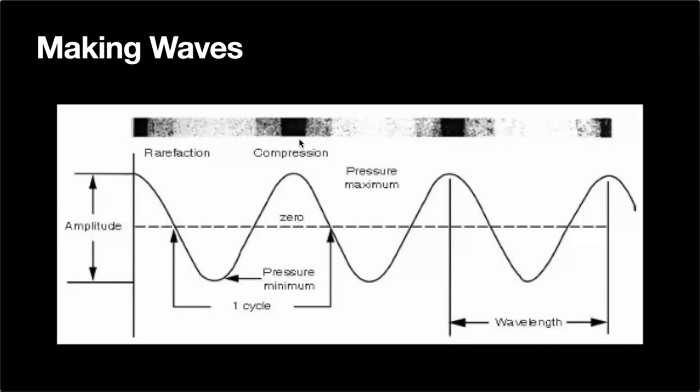In echocardiography, the 'loudness' we get isn't actually sound — what we actually get is grayscale. More or less grayscale corresponds to the size of the amplitude of the waveform. The amplitude of these waveforms is measured in decibels, which are a logarithmic scale — we don't need to get into that.